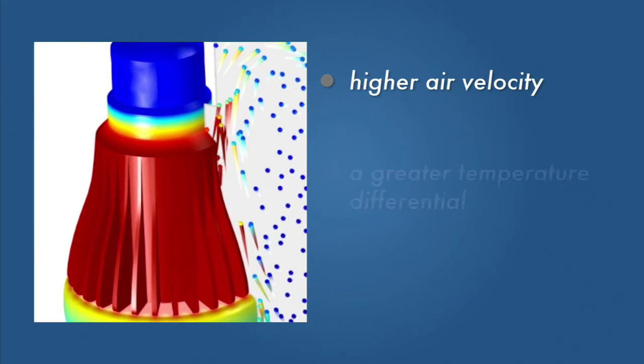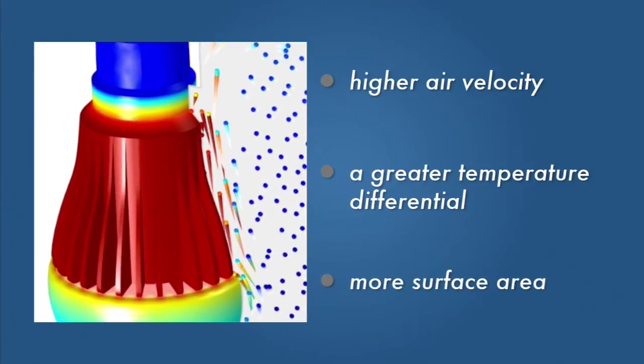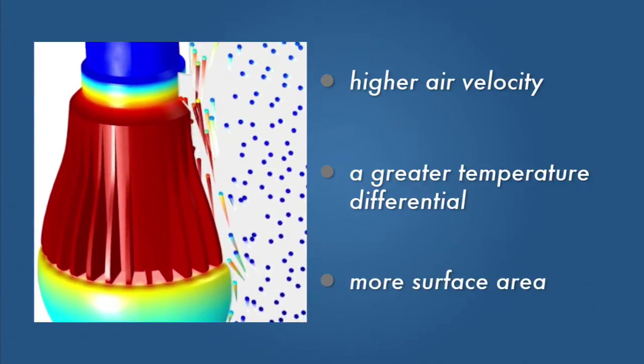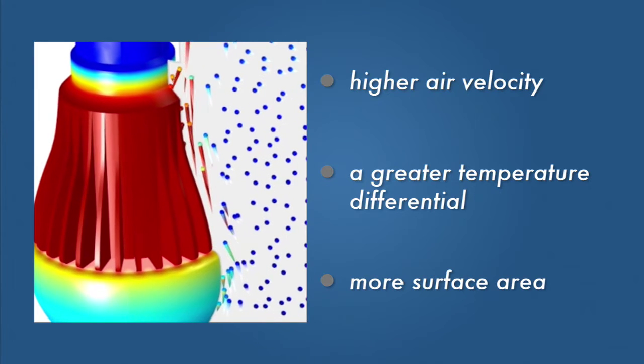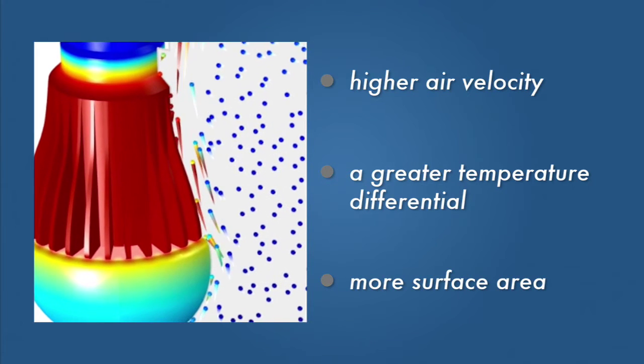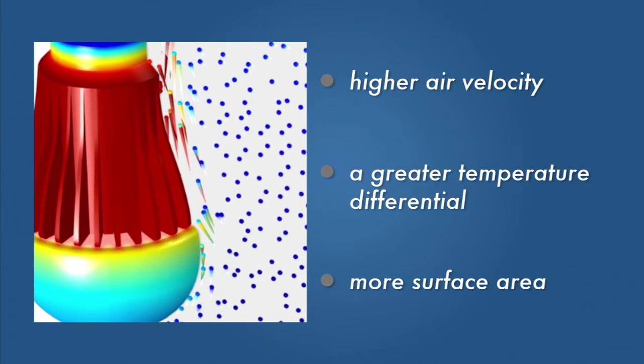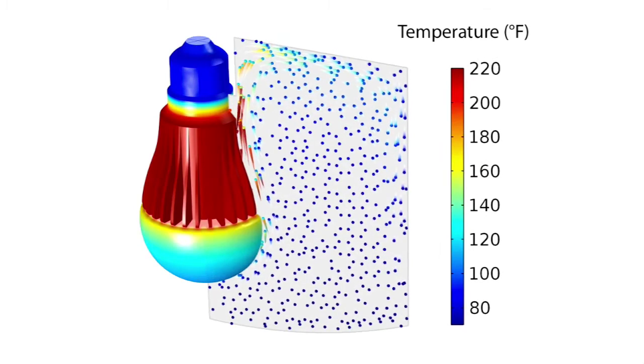Higher air velocity, a greater temperature differential, and more surface area will draw heat away from the bulb. These parameters, however, are interrelated and vary over the bulb's surface.